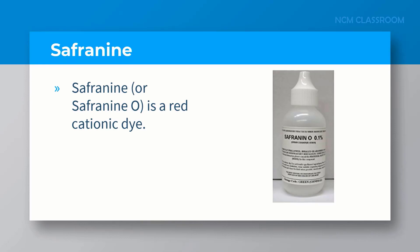Safranine or safranine O is a red biological dye. It binds to nuclei, DNA, and other tissues.